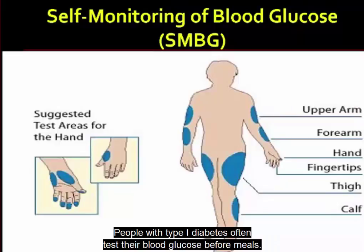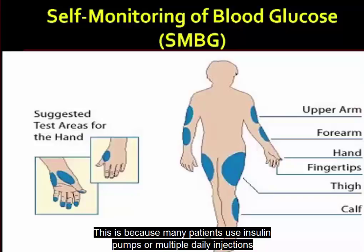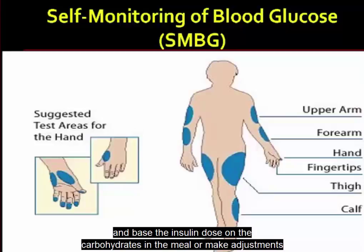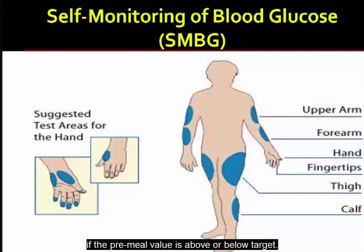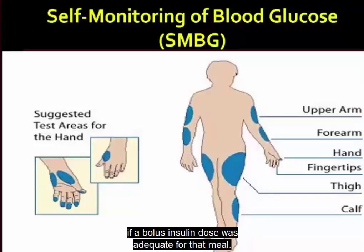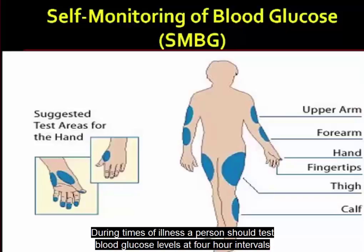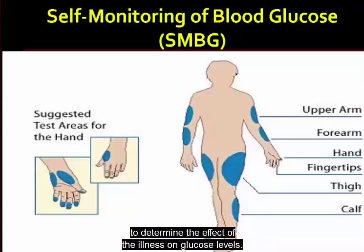People with type 1 diabetes often test their blood glucose before meals because many patients use insulin pumps or multiple daily injections and base the insulin dose on the carbohydrates in the meal or make adjustments if the pre-meal value is above or below target. Testing 2 hours after the start of a meal helps a person see how effectively they judged what was eaten or to determine if a bolus insulin dose was adequate. During times of illness, a person should test blood glucose levels at 4-hour intervals.